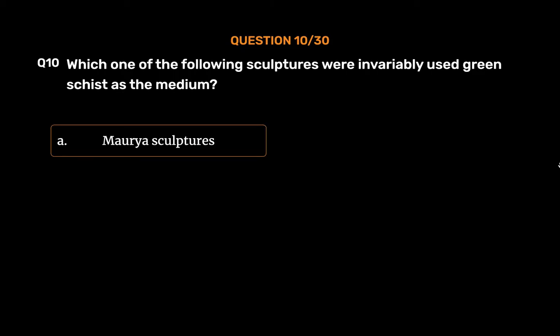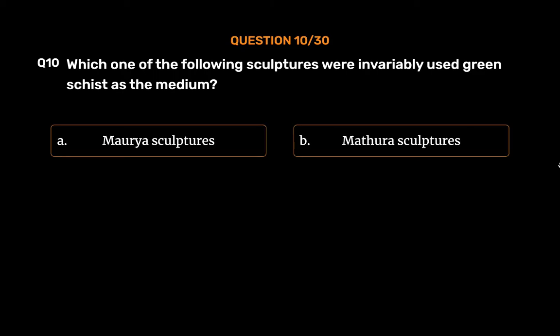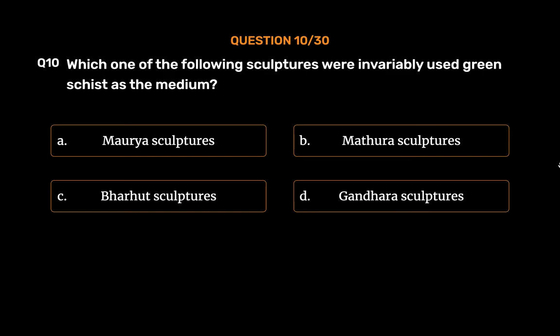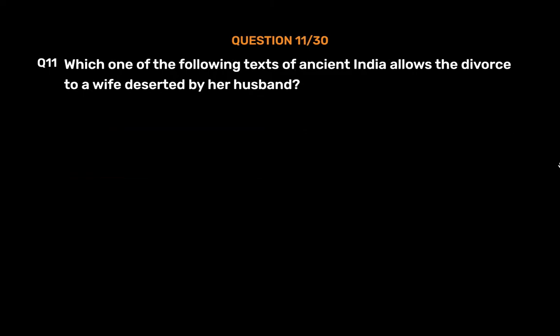Question number ten: Which one of the following sculptural traditions invariably used green schist as the medium? Option A: Maurya sculptures, Option B: Mathura sculptures, Option C: Bharhut sculptures, Option D: Gandhara sculptures. The correct answer is Option D, Gandhara sculptures.